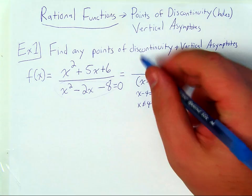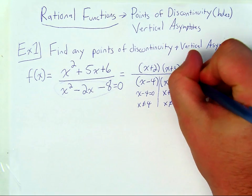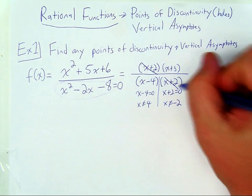I'm going to need to factor the numerator. Two factors of six that add to five are x plus two and x plus three, and see if anything simplifies. You can see that x plus two simplifies.